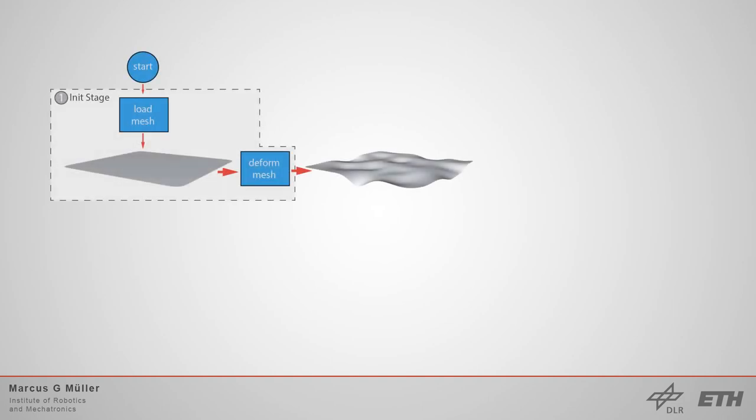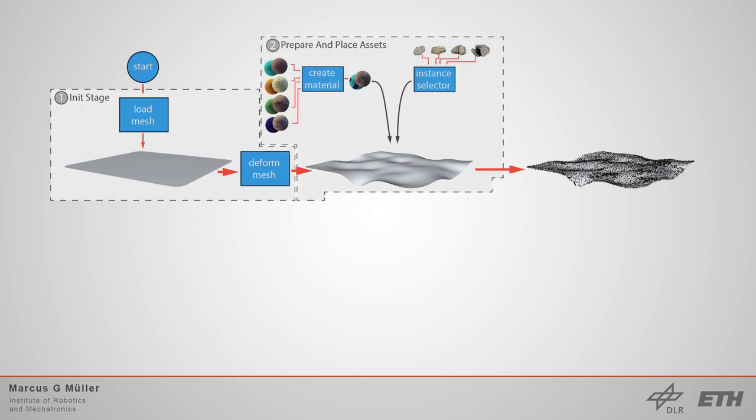First, a custom mesh is loaded, which serves as a fundamental landscape model and is called stage. This mesh is then randomly distorted. OASIS lets you add multiple stages, however for most use cases one stage should be enough. Next, textures are merged together and are applied to the stage model. Furthermore, objects like rocks are placed on the stage.